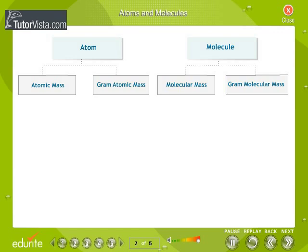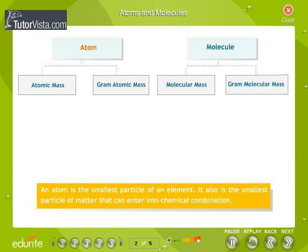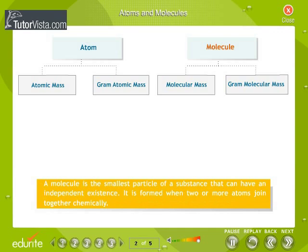Atoms and Molecules. Atoms and molecules form the basic building blocks of matter. An atom is the smallest particle of an element, it also is the smallest particle of matter that can enter into chemical combination. A molecule is the smallest particle of a substance that can have an independent existence, it is formed when two or more atoms joined together chemically.